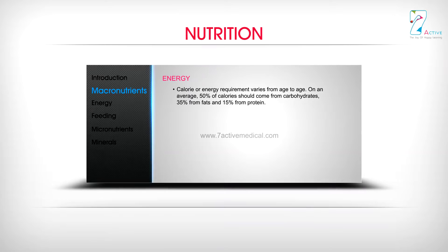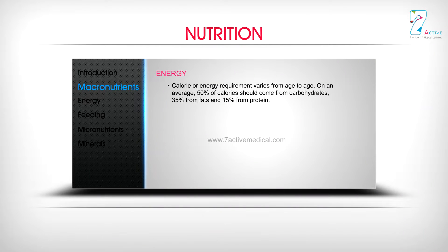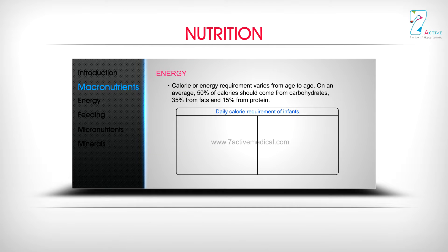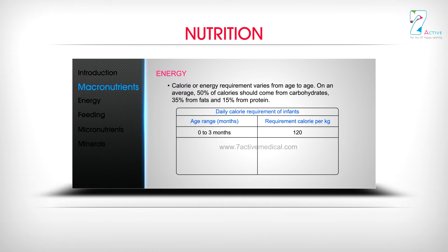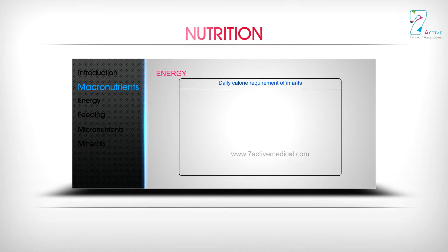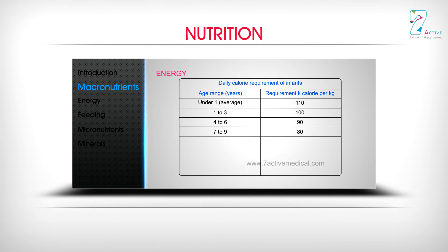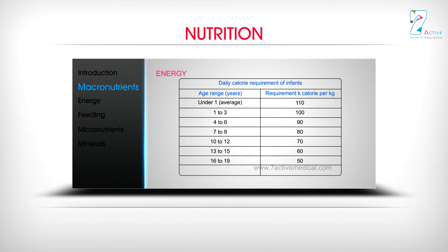Calorie or energy requirement varies with age. On average, 50% of calories should come from carbohydrates, 35% from fats, and 15% from protein. Daily calorie requirements per kilogram: 0–3 months: 120; 3–6 months: 115; 6–9 months: 110; 9–12 months: 105. By age group in years: under 1: 110 kcal/kg; 1–3: 100; 4–6: 90; 7–9: 80; 10–12: 70; 13–15: 60; 16–19: 50; adult: 40.